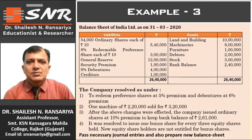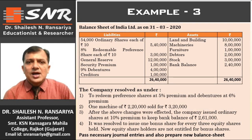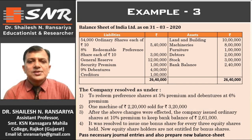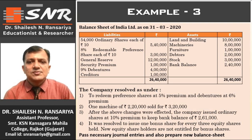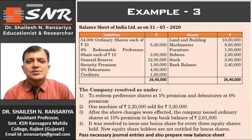See the adjustments. Number 1: redeem preference shares at 5% premium and debentures at 6% premium. Number 2: one machine of Rs. 2,20,000 sold for Rs. 3,20,000. Next, after the above changes were effected, the company issued ordinary shares at 10% premium to keep the bank balance of Rs. 2,61,000. It was resolved to issue one bonus share for every three equity shares held. New equity shareholders are not entitled to bonus shares. Pass necessary journal entries and also prepare the balance sheet.